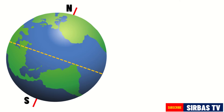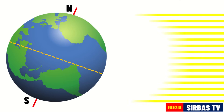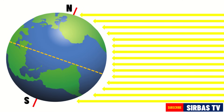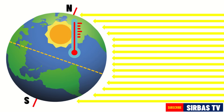Because the Earth's axis is tilted, different parts of the Earth receive different amounts of sunlight as the Earth revolves around the sun. This results in different temperatures and different weather conditions we call seasons. The hemisphere that receives more solar rays will experience warmer temperature, and the hemisphere that receives lesser solar rays will experience cooler temperature.